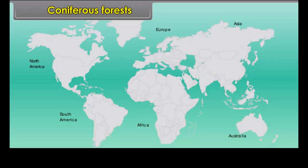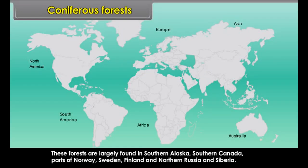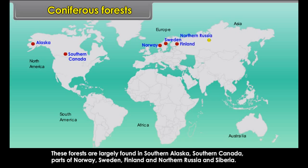Coniferous Forests. These forests are largely found in southern Alaska, southern Canada, parts of Norway, Sweden, Finland and northern Russia and Siberia.